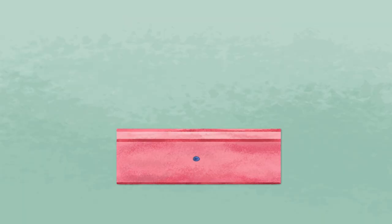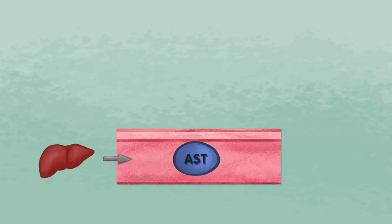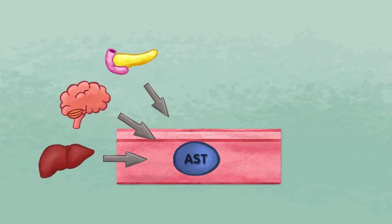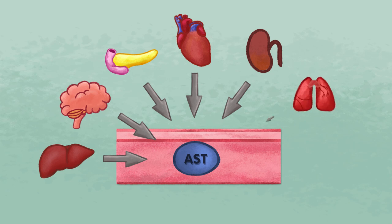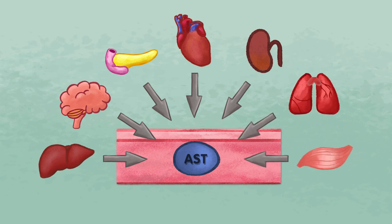AST is found in a variety of tissues, including the liver, but also the brain, the pancreas, the heart, the kidneys, the lungs, and skeletal muscles. If any of these tissues are damaged, AST will be released into the bloodstream.